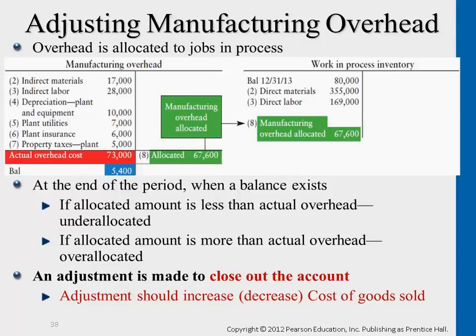Now we want to assign these costs all together to cost of goods sold at once. When it comes to year-end, we calculate the actual cost, compare it against the cost that we assigned, and the difference is adjusted to the cost of goods sold account.